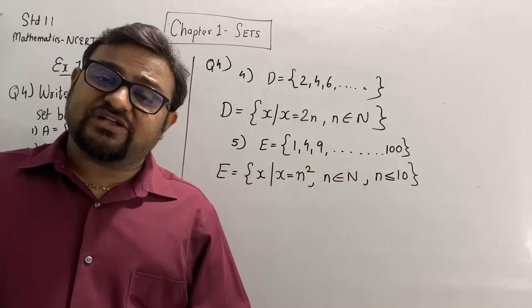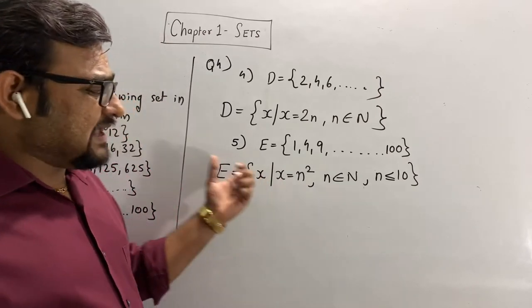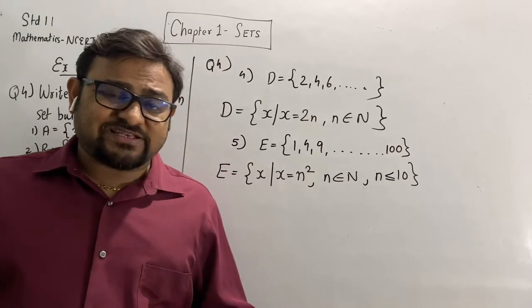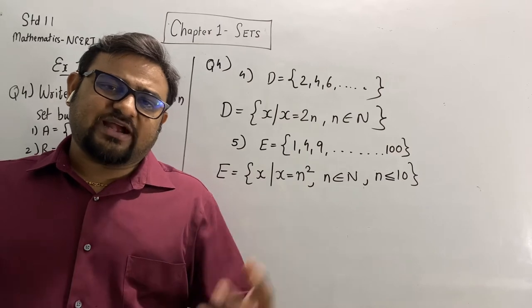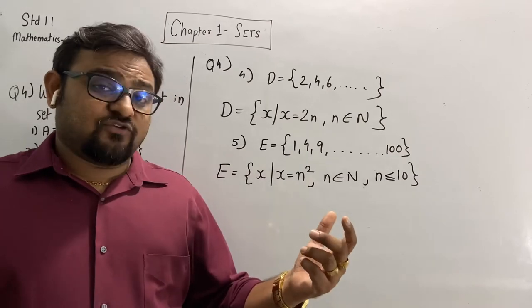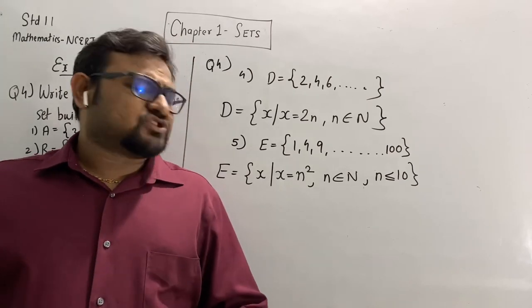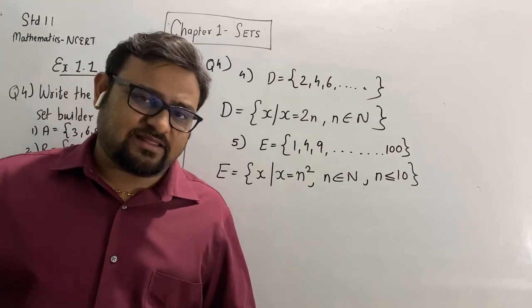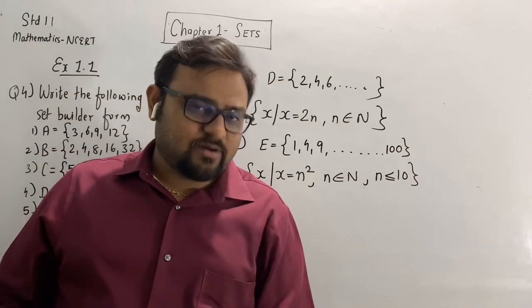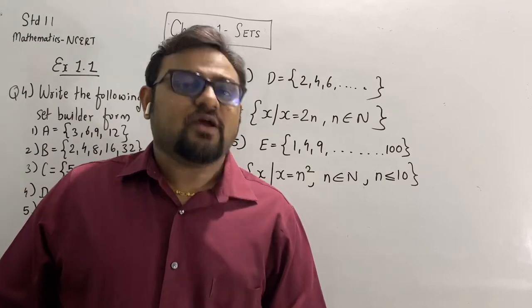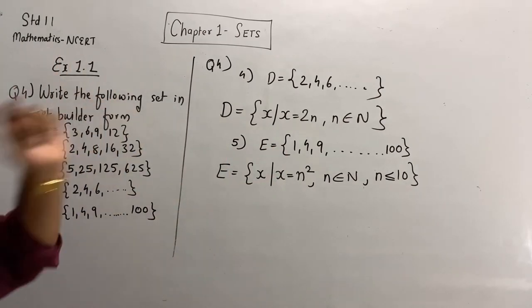You might have studied that N stands for natural numbers; Z stands for integers, which includes negative values and 0; Q stands for rational numbers; and R for real numbers. If you subtract Q from R, you get irrational numbers. These are what you study in standard 10. In standard 11, you will study one more thing: complex numbers, also called imaginary numbers.